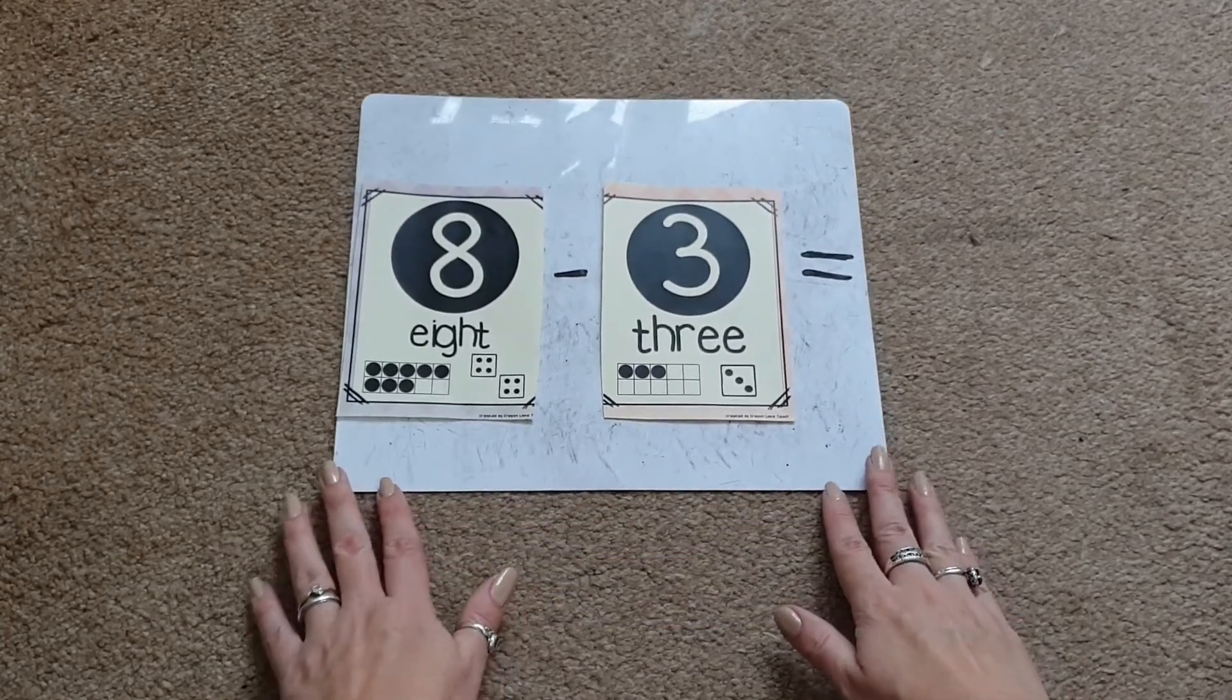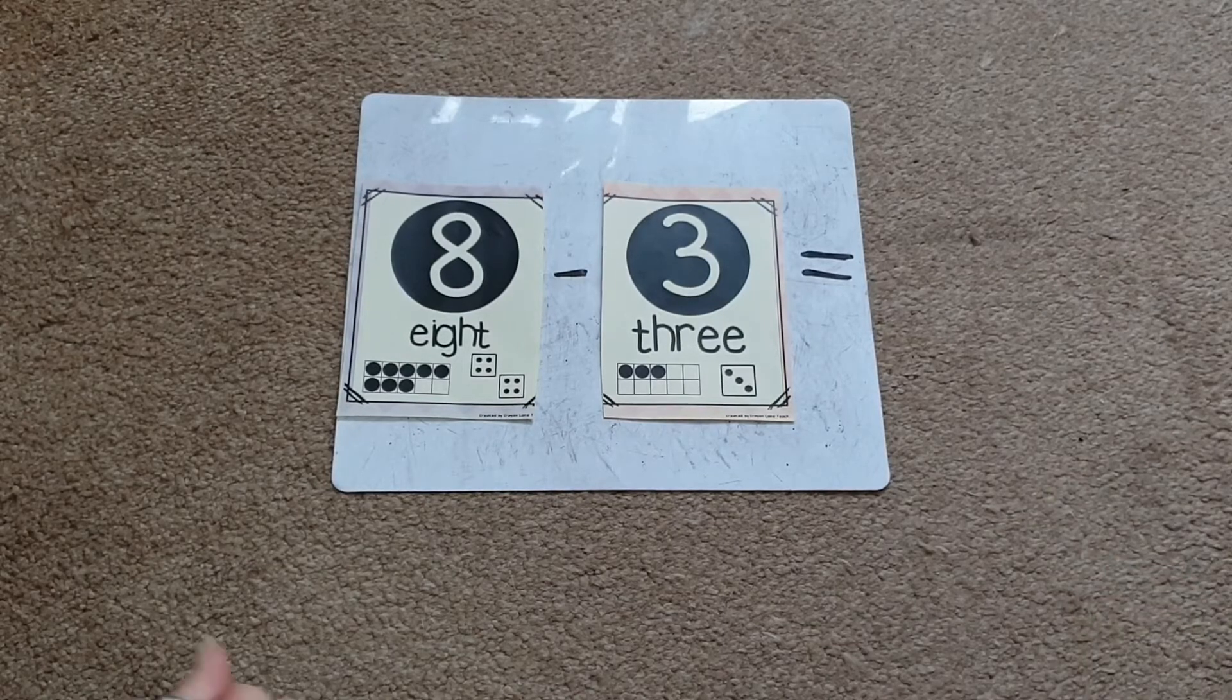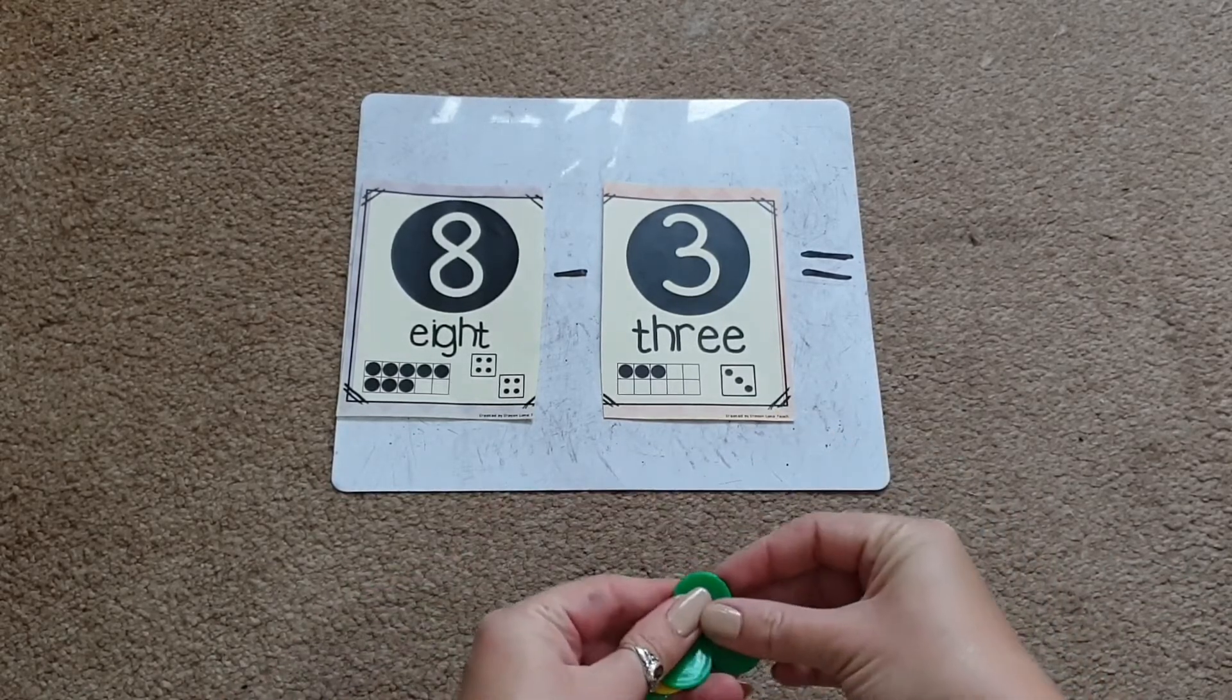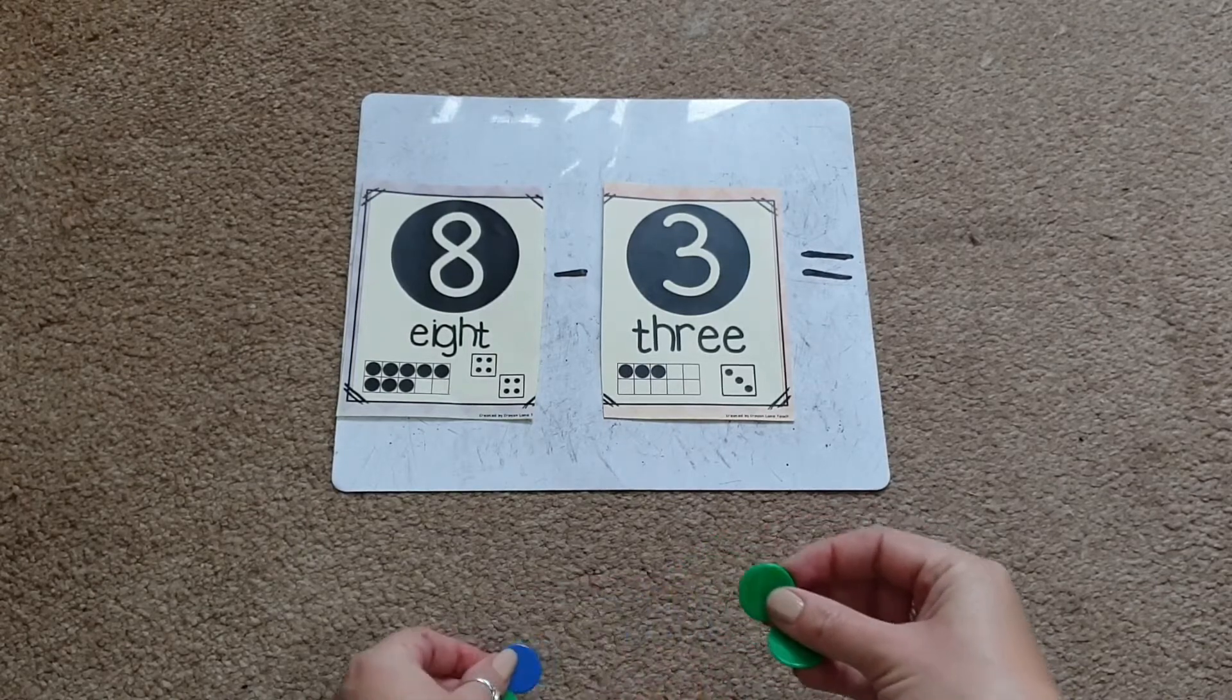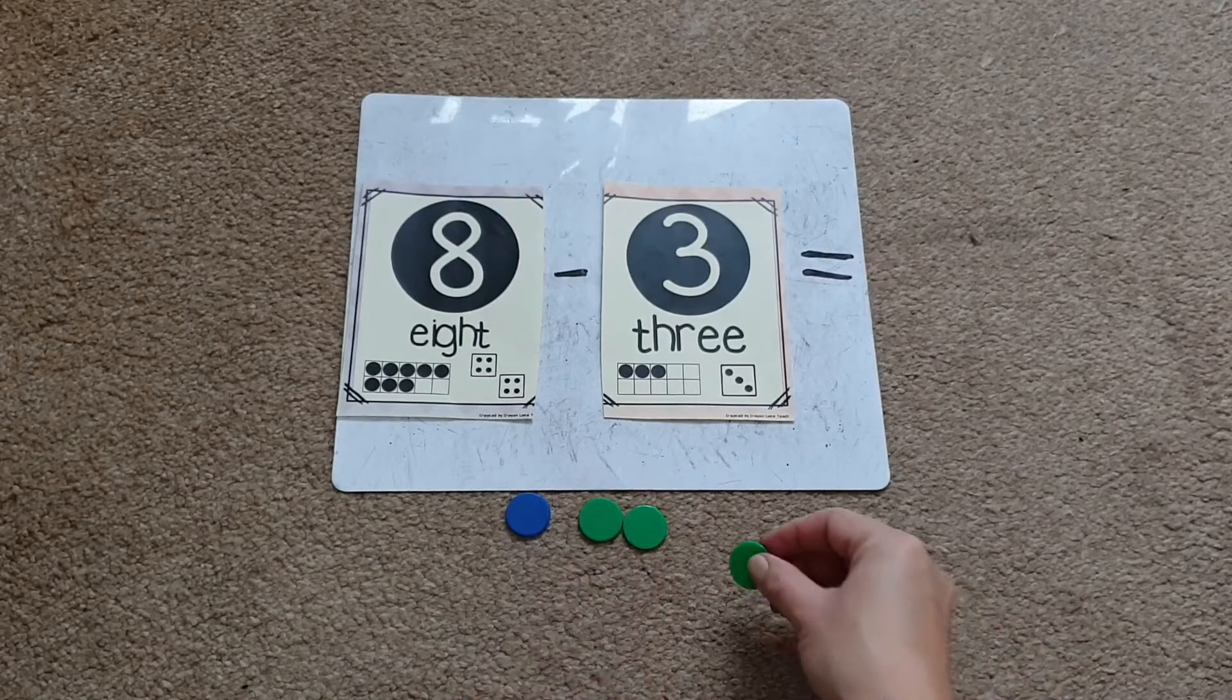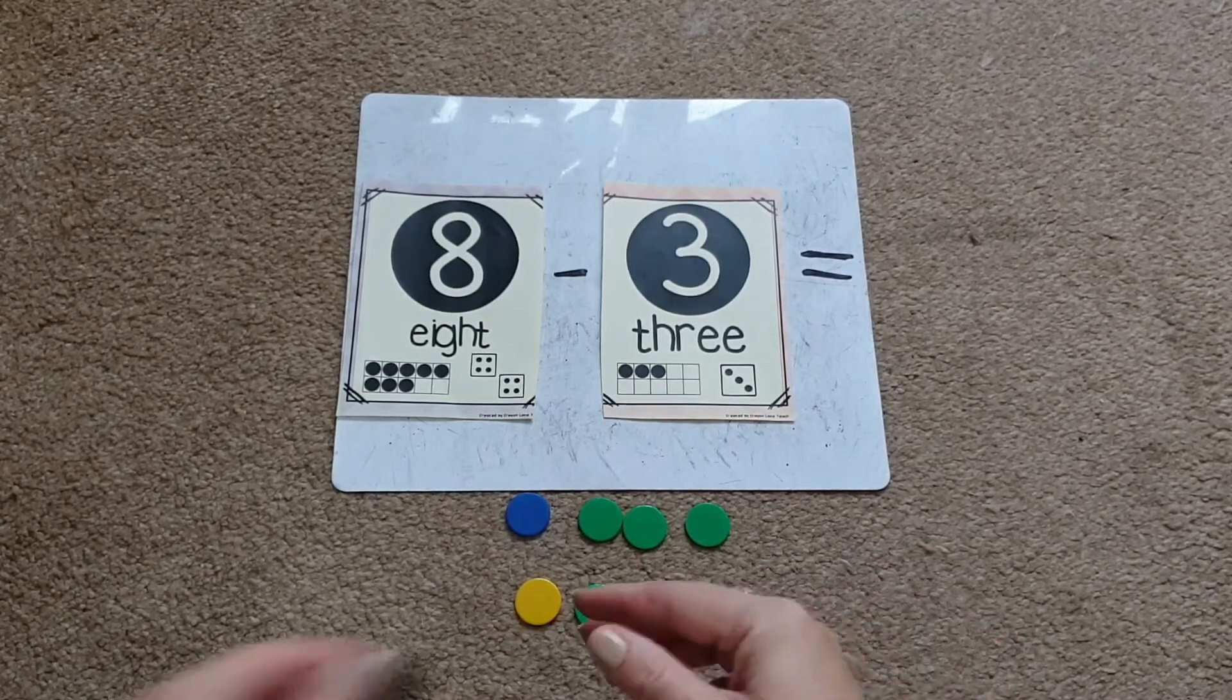And then again, you can just use either concrete materials like counters like I've got here. And again, you could also even use pictures as well. But I'm going to use concrete materials to do 8 take away 3. So we need to count out 8 objects. So 1, 2, 3, 4, 5, 6, 7, 8. Obviously asking the children to check that they do indeed have 8 there.